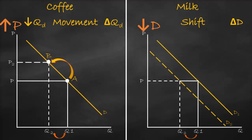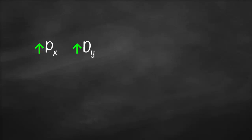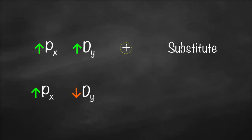The relationship between the higher price of coffee and lower demand for milk is negative — they move in opposite directions, so these goods are complements. To summarize: if the price of product X goes up and the demand of product Y goes up, they have a positive relationship — they are substitutes. If the price of X goes up and the demand of Y goes down, they have a negative relationship and are complements.